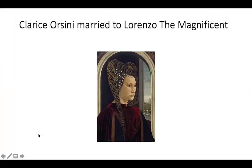You can see the headdress in this painting of Clarice Orsini, who is married to Lorenzo the Magnificent. Her headdress is quite elaborate — pearl-studded and her hair is completely covered and bound up. That indicates she's married. This was painted by Ghirlandaio. She has very luxurious clothing but she's not actually looking straight at us, and she doesn't look particularly happy. She is an example of a woman married to someone very powerful.